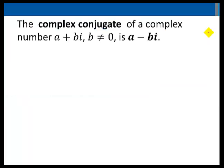The complex conjugate of a complex number a plus bi, where b is not equal to 0, is a minus bi.